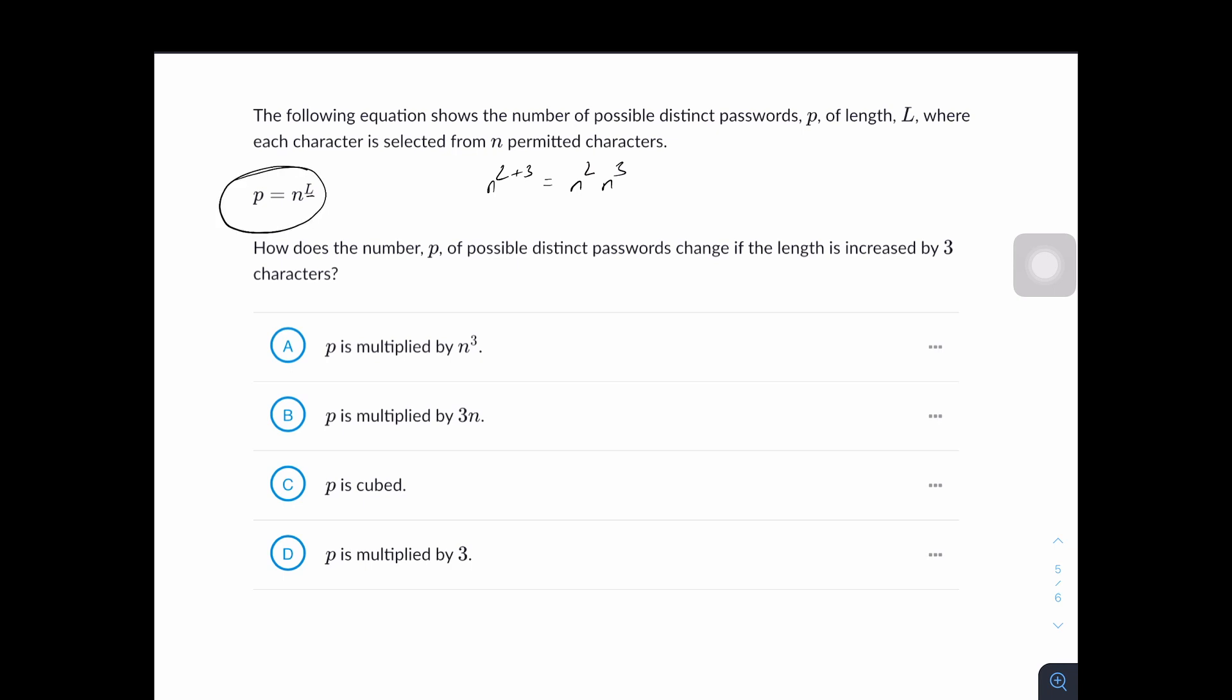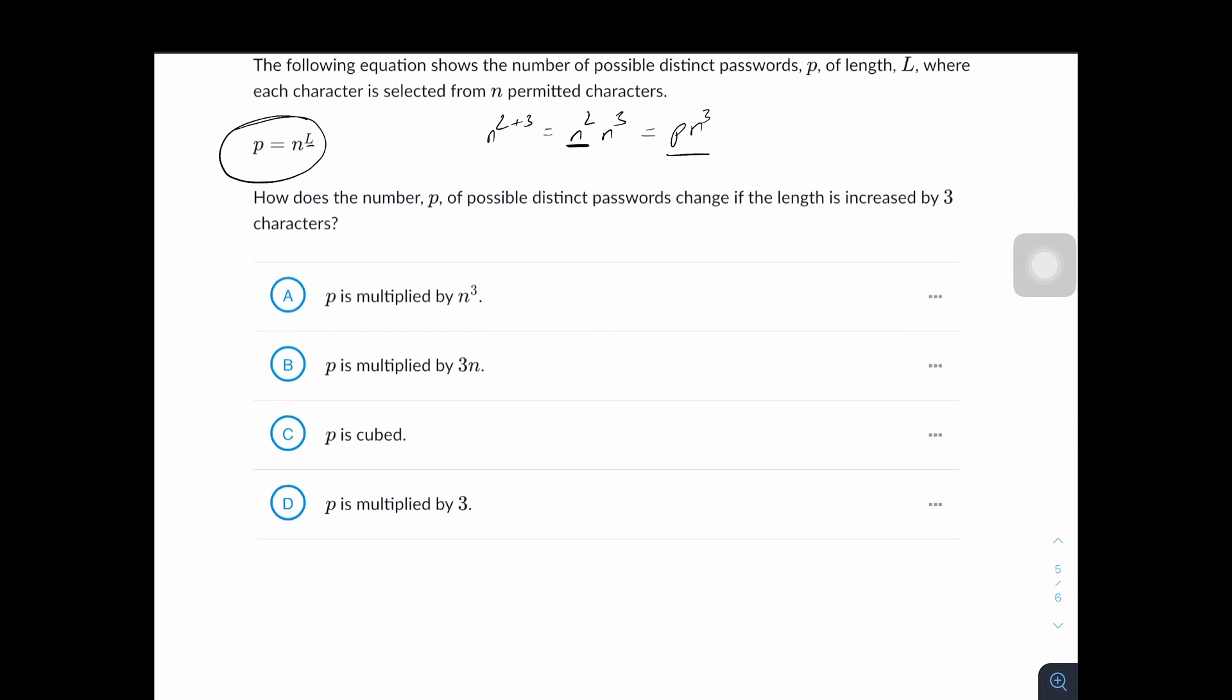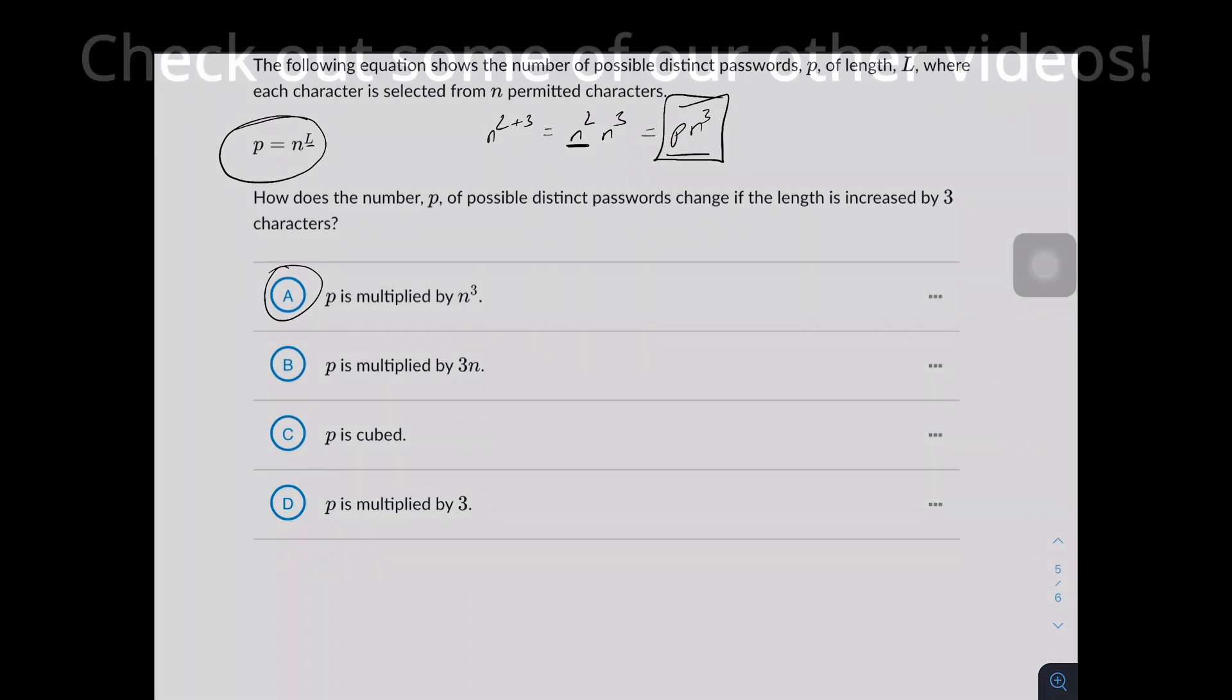And from the expression given to us, P is equal to n^L. So we can substitute the n^L we have with P. So this becomes P times n cubed. And this is all we need to answer this question. The answer choices say P is multiplied by n cubed, P is multiplied by 3n, P is cubed, P is multiplied by 3. And the answer choice is A. Since the expression we got right here, P is being multiplied by n cubed.